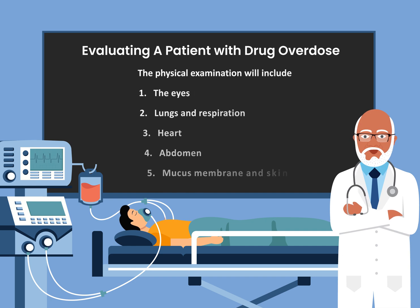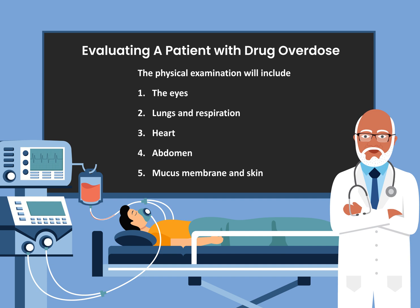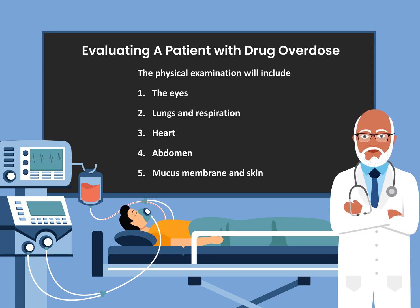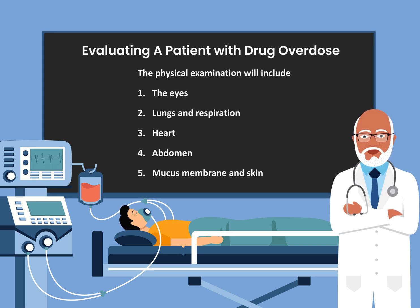Now I can proceed to the physical examination. The physical examination will include: number one, the eyes; number two, lungs and the respiration; number three, the heart; number four, the abdomen; and number five, the mucous membrane and the skin.